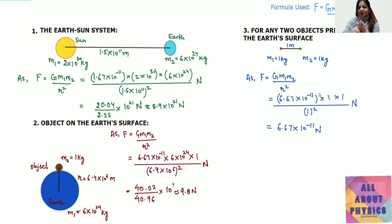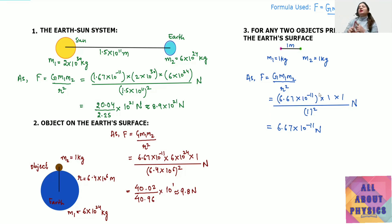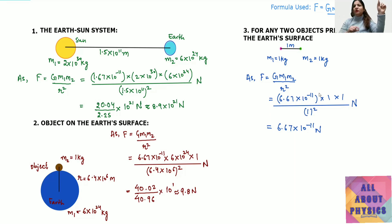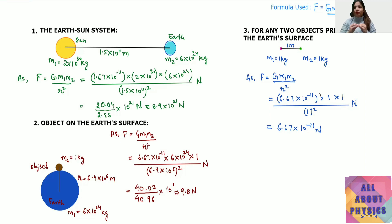From this we conclude that gravitational forces have three main properties: first, they are attractive in nature — two objects always attract each other; second, they are central forces — distance is always calculated from the center of one object to the center of the other; and third, gravitational forces are weak forces.